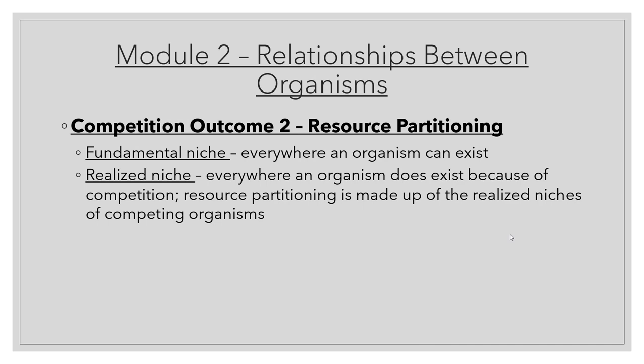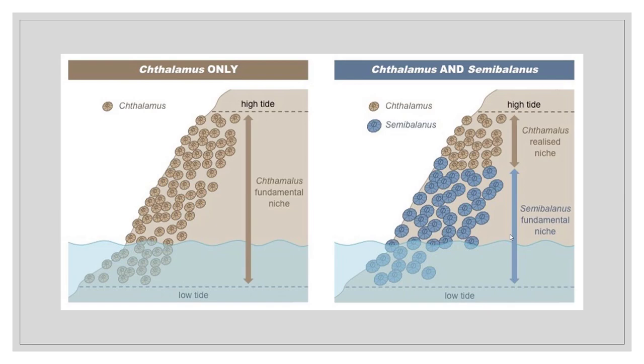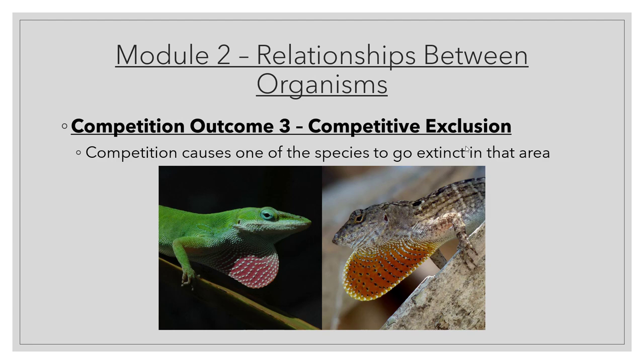You need to know the difference between a fundamental niche and a realized niche. A fundamental niche is everywhere that an organism could exist — you as a human being could exist almost anywhere on the globe. Your realized niche is your neighborhood and the places you actually visit — a much smaller subset — because outside pressures narrow all the possibilities down. In the barnacle example, the blue barnacle came in and the other barnacle underwent resource partitioning, shrinking its niche because it had a wide enough range of tolerance to still exist.